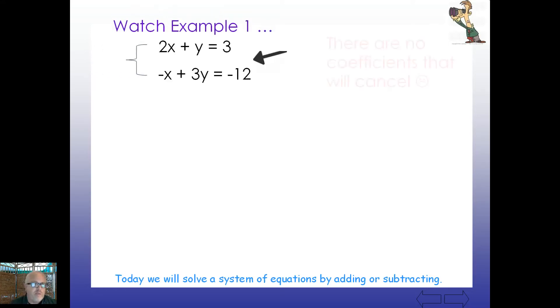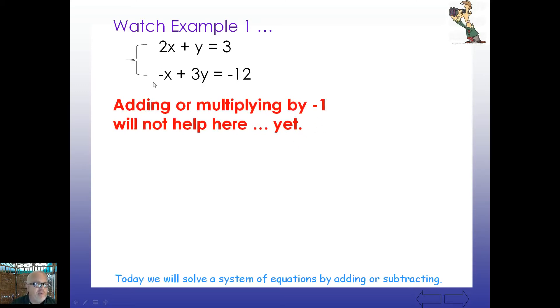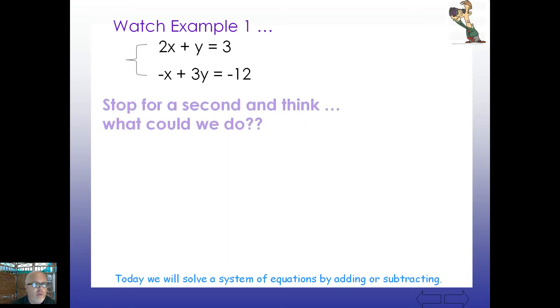All right. So take a look. Just watch this example. I'll do all the work here. And here if you were to look at these, 2x plus y equals 3, negative x plus 3y equals negative 12. Of course we could solve by substitution. If you prefer that, you can go ahead and maybe add x to both sides, divide by 3, get a fraction. Subtract 2x up here maybe if you want. But if we just want to focus on solving by elimination, there are no coefficients that will cancel. So what can we do here? Well, take a look. Adding or multiplying by negative 1 will not quite help just yet. Because even if we multiply by negative 1 here, nothing changes enough to allow us to add and get rid of things. So stop for a second and think, what could we do?